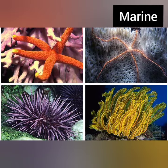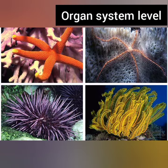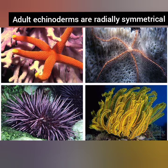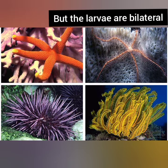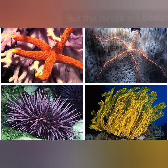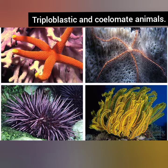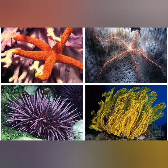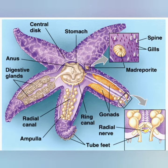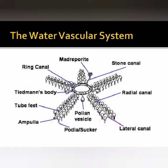All are marine with organ system level of organization. The adult echinoderms are radially symmetrical but the larvae are bilaterally symmetrical. They are triploblastic and acoelomate animals. The digestive system is complete with mouth on the lower side and anus on the upper side.